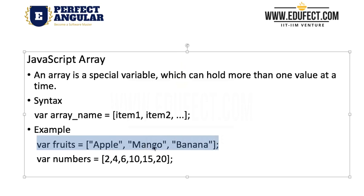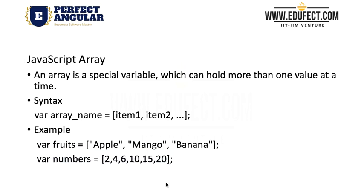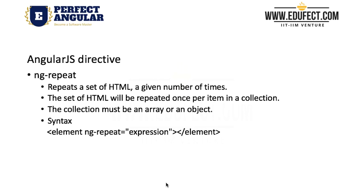Similarly we have defined array numbers and we have put six values: 2, 4, 6, 10, 15, 20 in them. Let's look at also another AngularJS directive that we use very commonly with arrays versus ng-repeat.